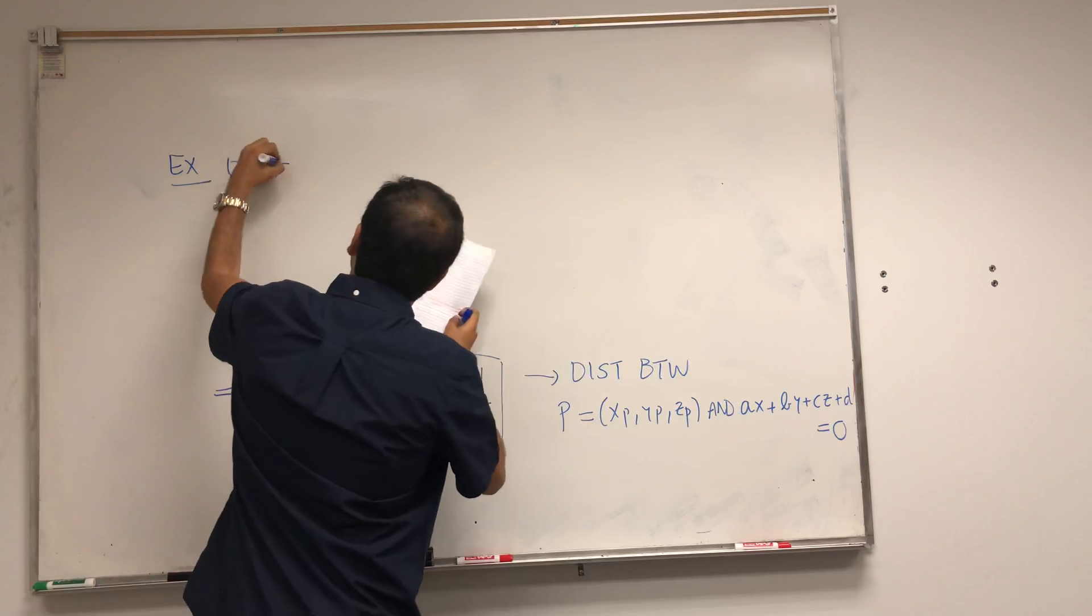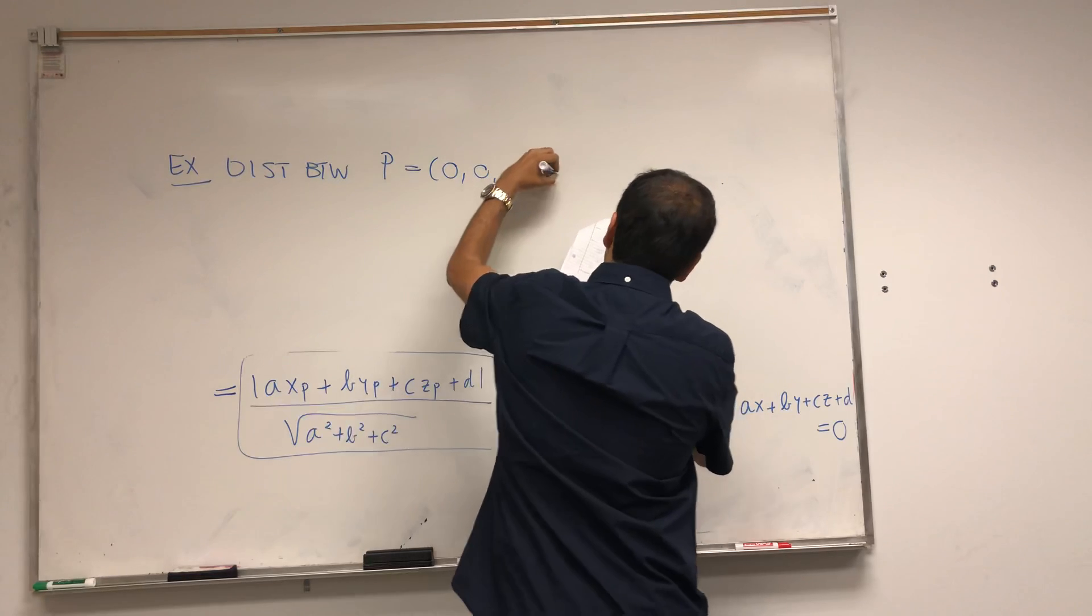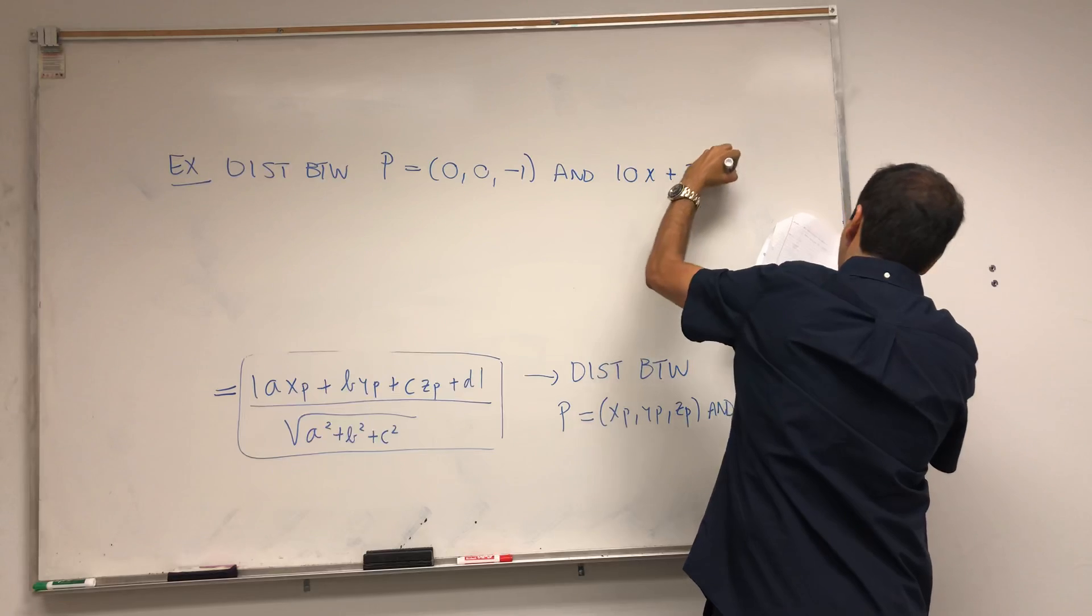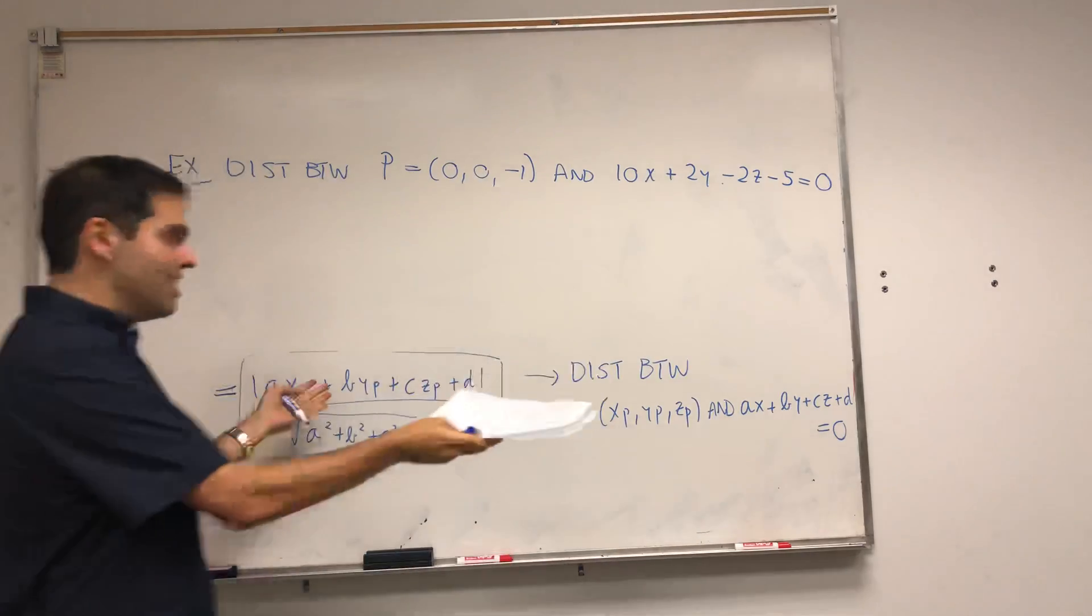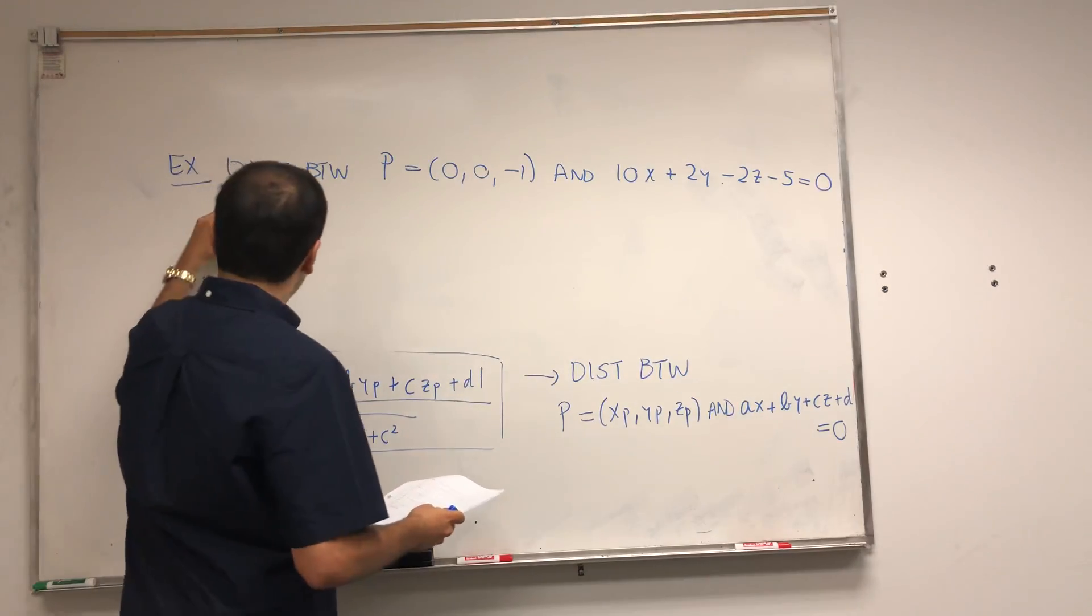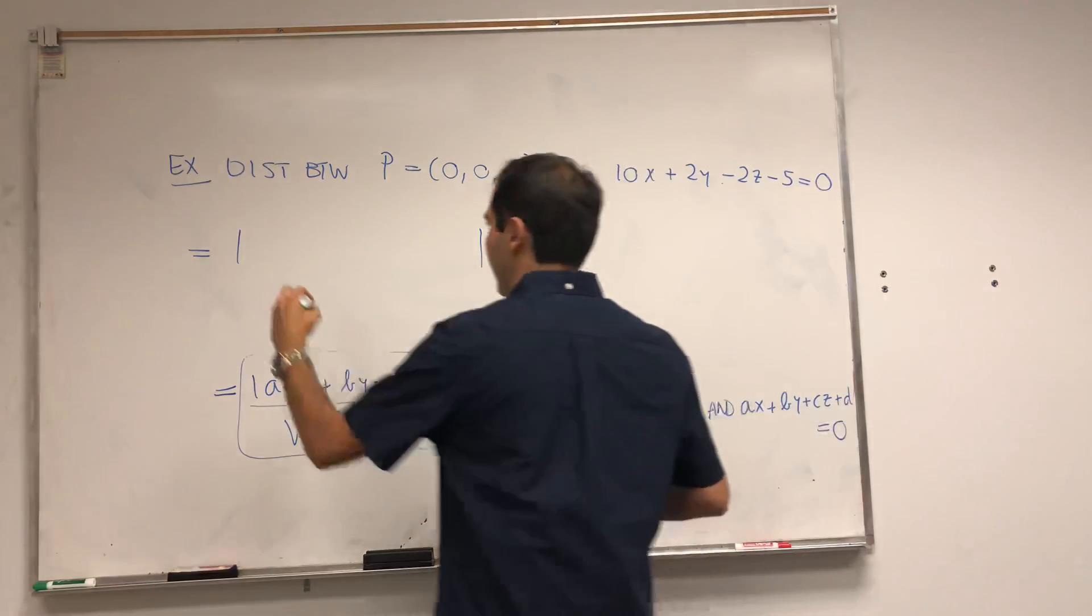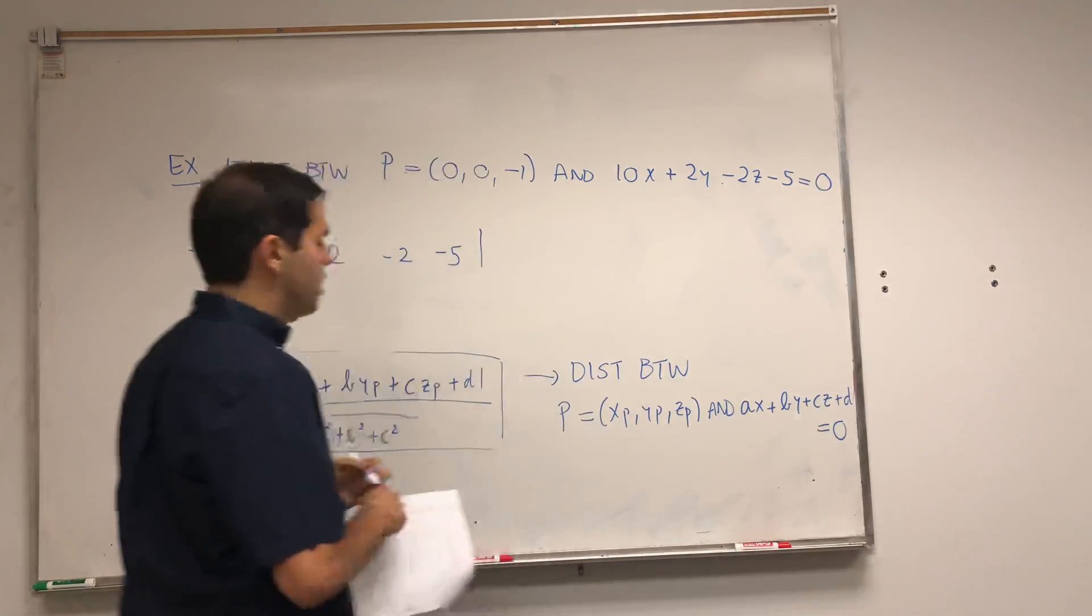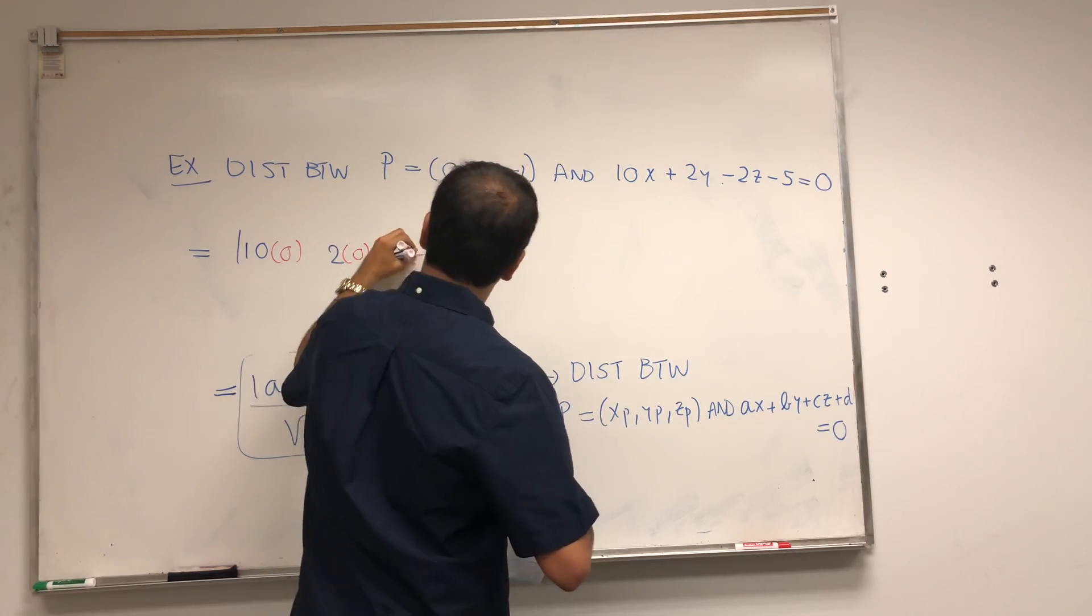Example: the distance between P = (0, 0, -1) and 10x + 2y - 2z - 5 = 0. It's actually very easy to find. This formula looks super complicated, but it's not too complicated. Basically all you do is you take the equation of the plane, so 10, 2, -2, -5, and instead of having x, y, z, you just put your points: 0, 0, -1.